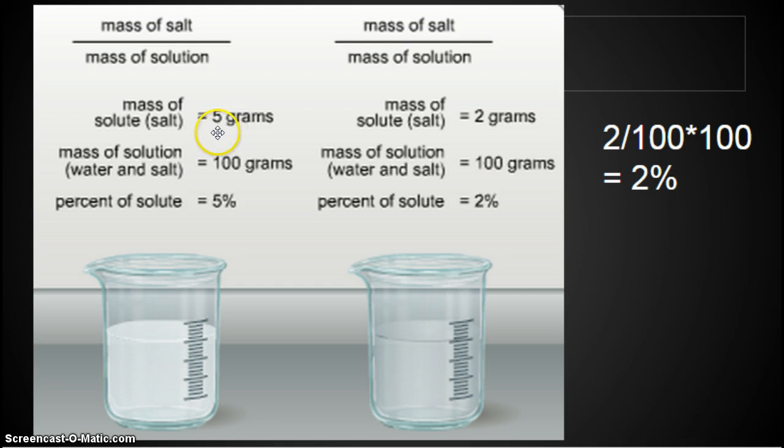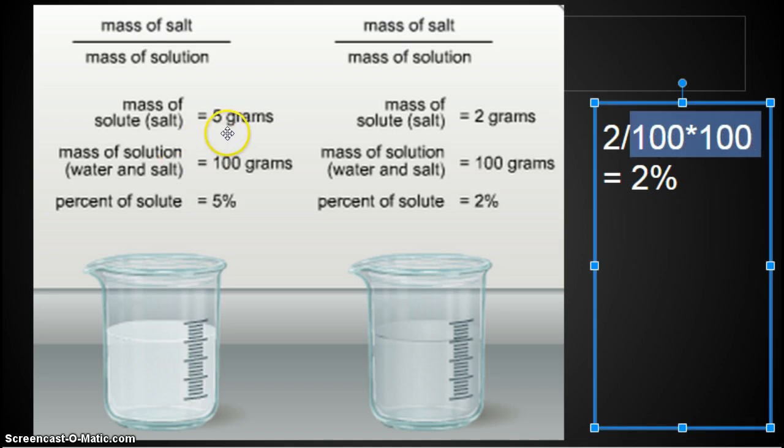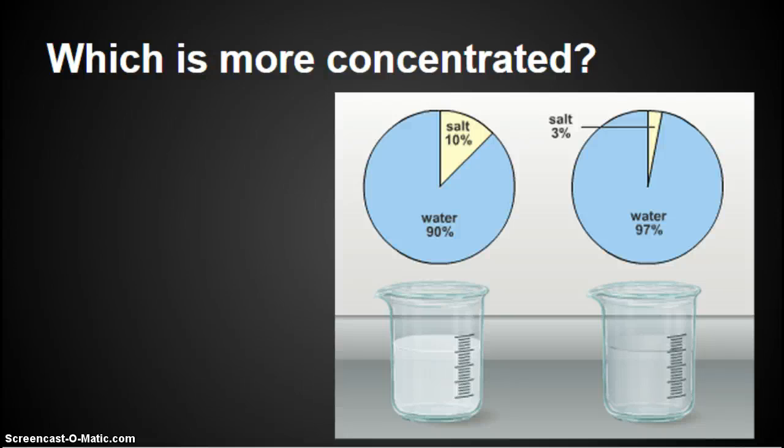My final answer is 2 divided by 100 times 100 equals 2 percent. So pretty easy if they give you the 100 grams. If you notice that, if the entire solution is 100 grams, since you're dividing by 100 and then timesing by 100, however much salt you have is what percentage you have.